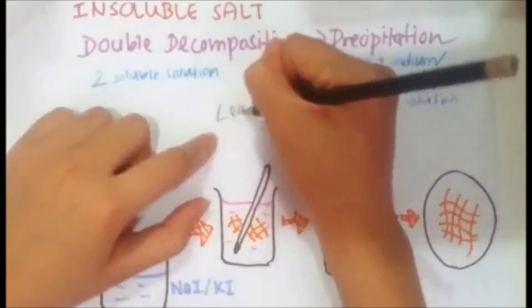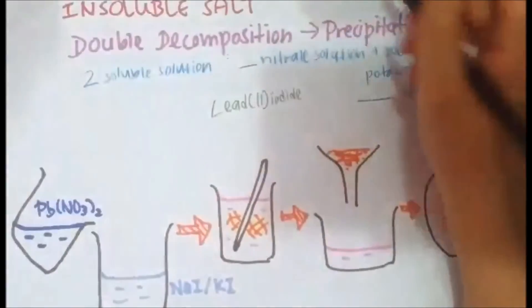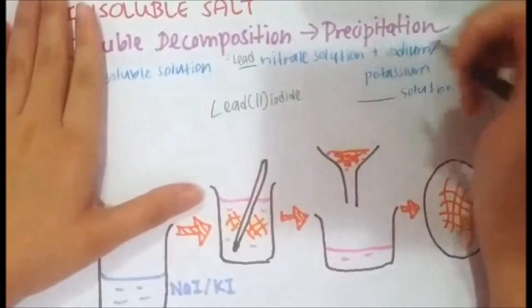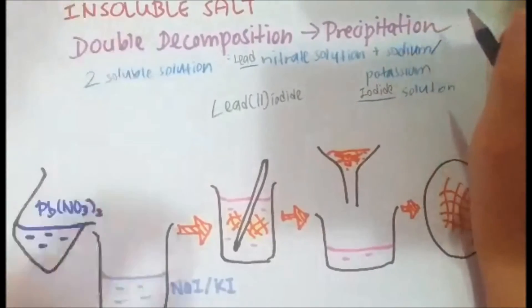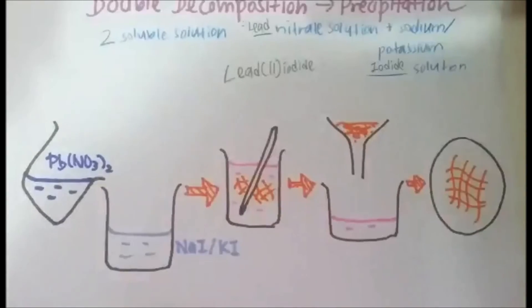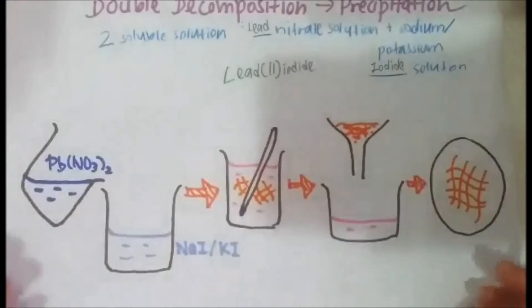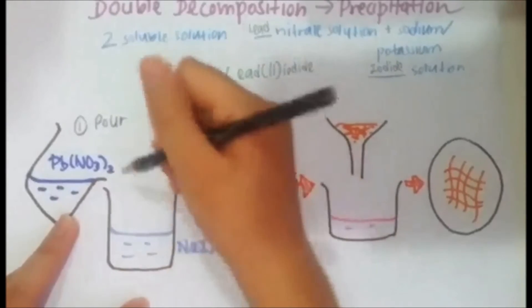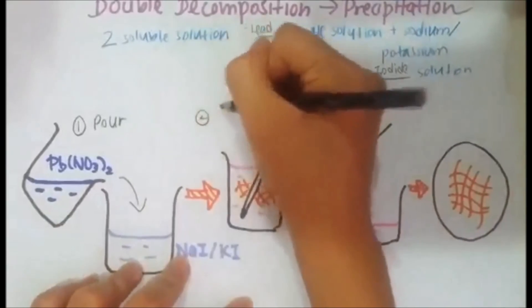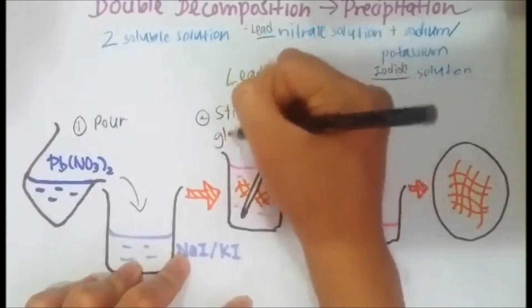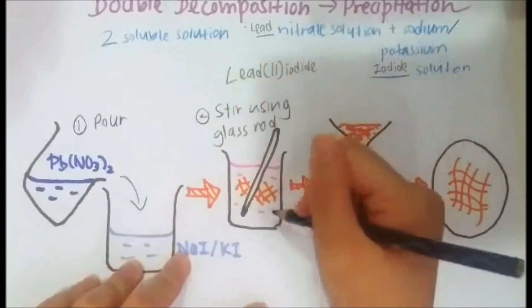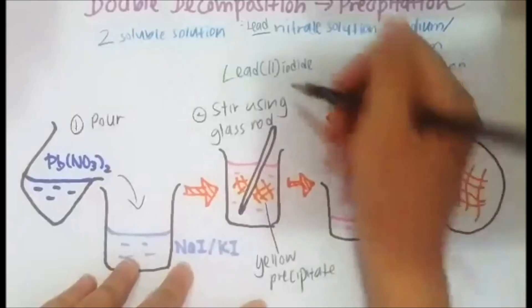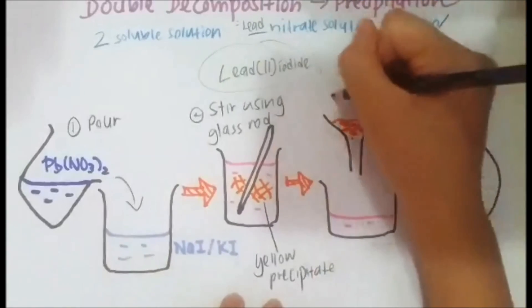For example, to prepare lead iodide, you need two soluble solutions: lead nitrate solution and sodium iodide or potassium iodide solution. Pour the lead nitrate solution into the sodium iodide or potassium iodide solution, then stir it using glass rods. You will find that a yellow precipitate forms, because lead iodide is yellow in color.